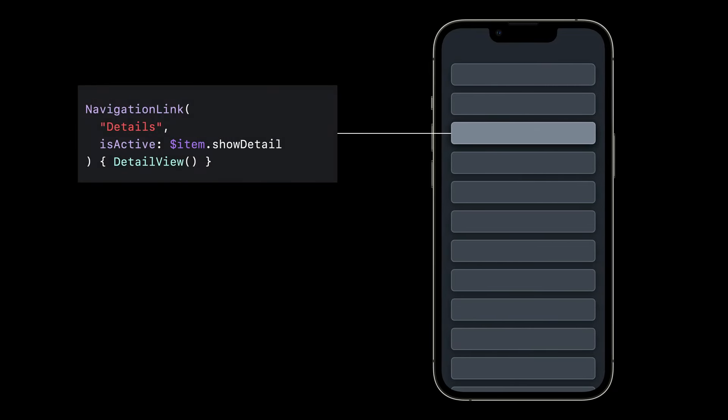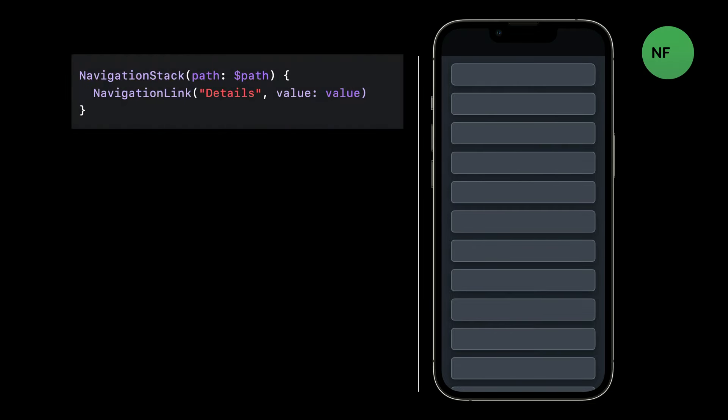With the existing navigation API, to present a link programmatically, I add a binding to the link. For example, I can present this link's view by setting item.showDetail to true. But this means I need a separate binding for each link. With the new API, we lift the binding up to the entire container, called a navigation stack. The path here is a collection that represents all the values pushed on the stack. Navigation links append values to the path. You can deep link by mutating the path, or pop to the root view by removing all the items from the path.